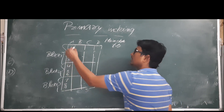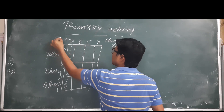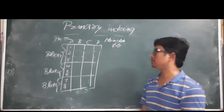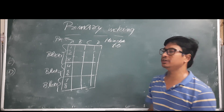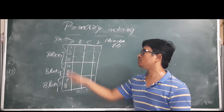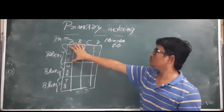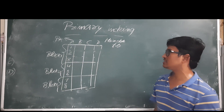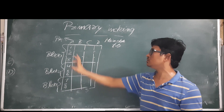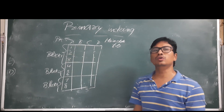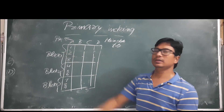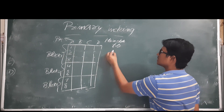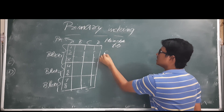Let's take A as the primary key. Everyone should know what a primary key is — we discussed it in previous videos. Since A is the primary key, there are no null values and no duplicate values in column A.